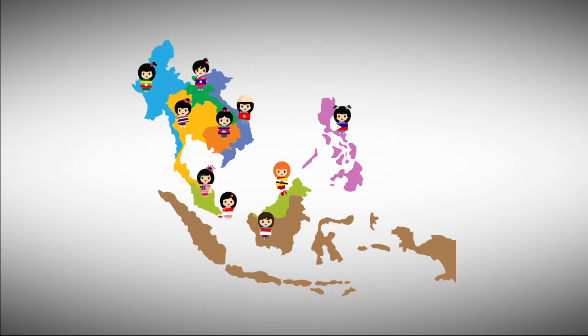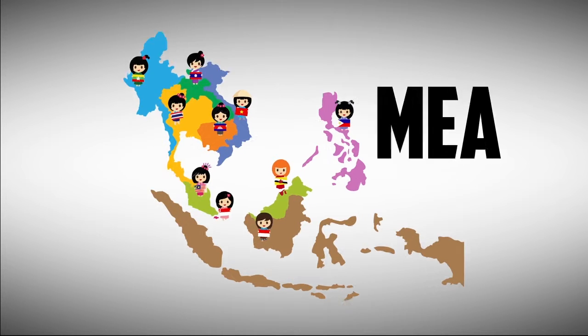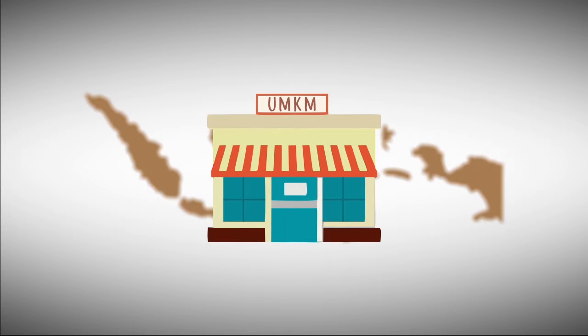We know that in 2016, ASEAN countries face the MEA, which removes barriers to the flow of labor and capital across those countries. Indonesia has also begun aggressively preparing people for the MEA by developing UMKM startup businesses. However, a common issue remains: capital is still a barrier.